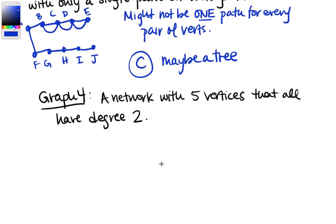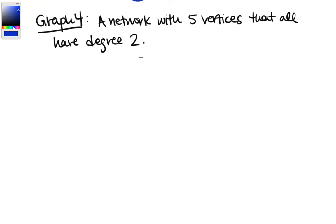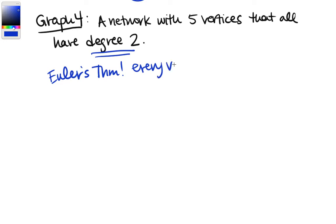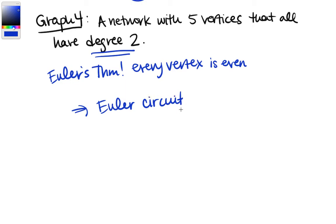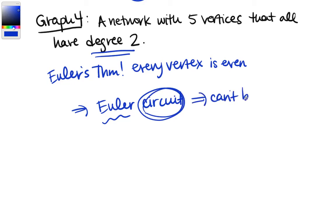Last: a network with five vertices that all have degree two. Using Euler's theorems, if every vertex is even, the graph has an Euler circuit. The key here is that the graph has a circuit, which means it's not a tree. So the answer is definitely not a tree.